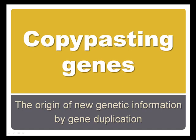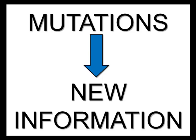Copy-pasting genes: the origin of new genetic information by gene duplication. Opponents of the modern theory of evolution, i.e. creationists and ID supporters, often argue that mutations do not add new information to the genome of any organism.